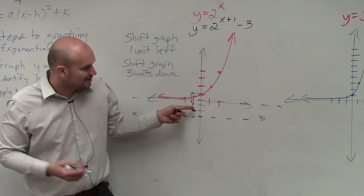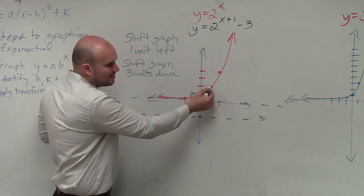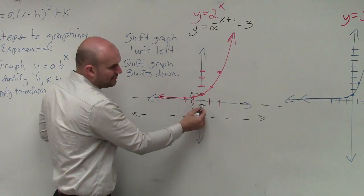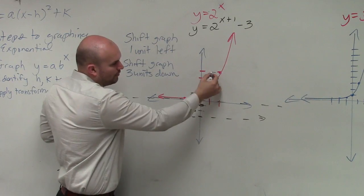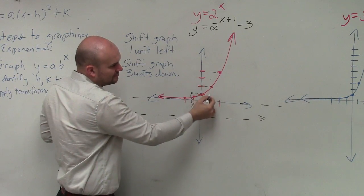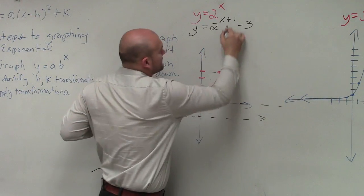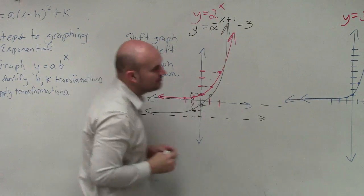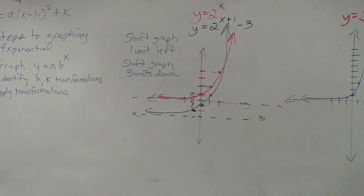So now, all I'm simply going to do is take all my points, go over one, down three. Over one, down three. And you guys can see my graph is now with the transformations in the black.